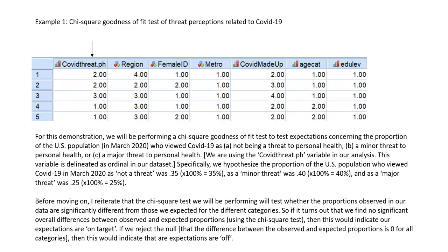Our example uses data obtained by Pew Research Center from March of 2020 — essentially survey data. Individuals from the U.S. population were surveyed regarding various social and political attitudes, as well as attitudes and beliefs related to COVID-19. We're going to be focusing on their perceptions of COVID-19 as a threat to personal health. The variable we're working with is COVIDthreat.ph, where individuals could respond that COVID-19 was not a threat, a minor threat, or a major threat to personal health.